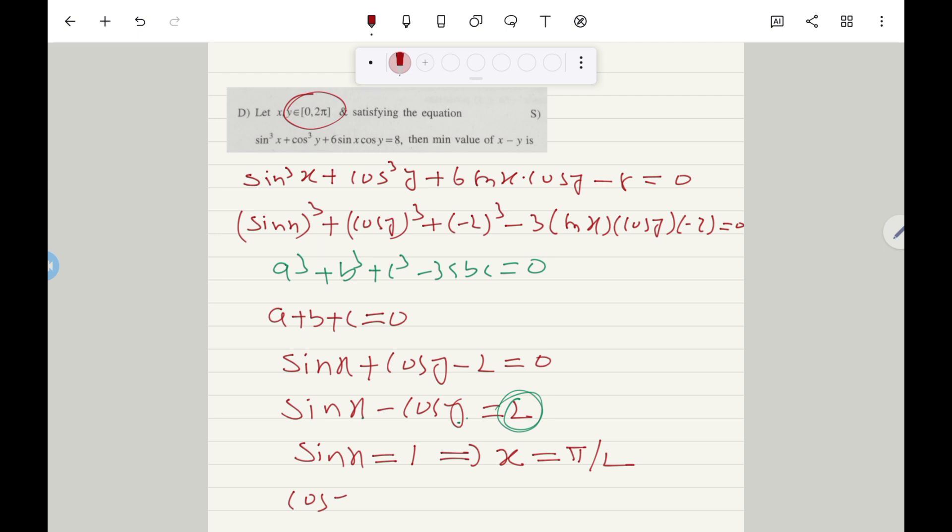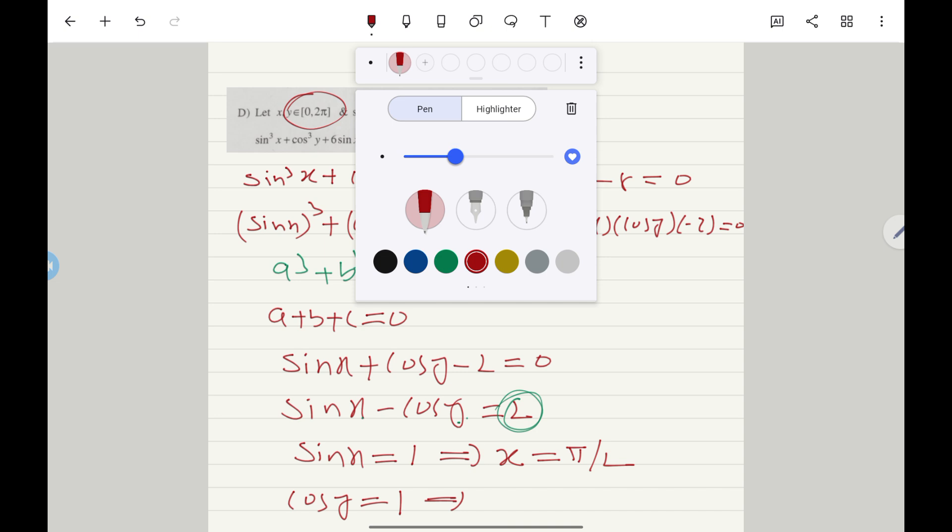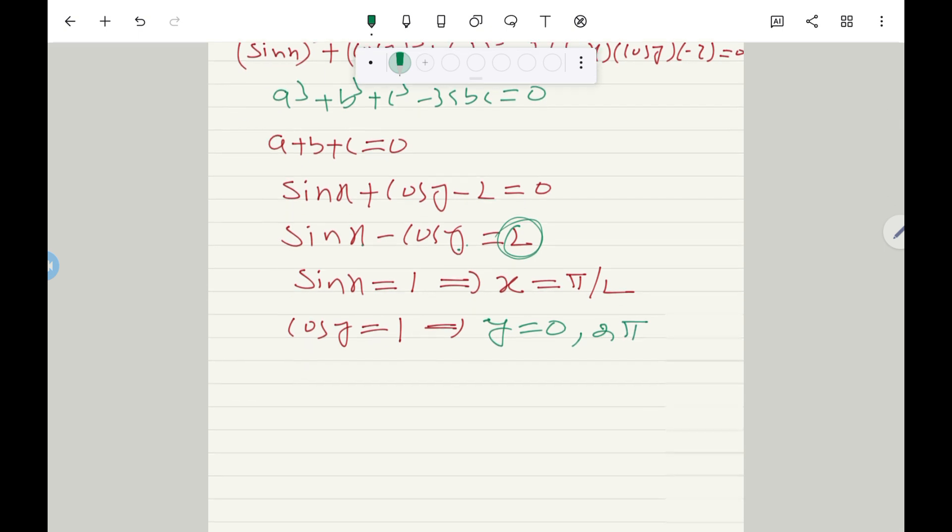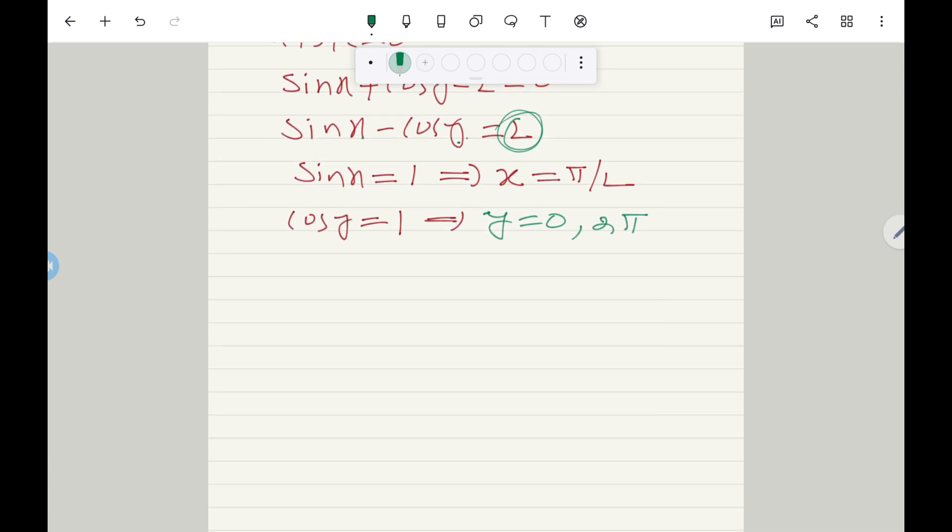Next cosy, cosy = 1. Here also we have infinitely many values for y, but I am going to find only the values which are in the interval 0 to 2π. So one of the y values is 0, because cos0 = 1. Another value of y is, that is 2π, so that also included because closed interval is given. So what I can say, the possible value of x is π/2 and possible y values are 0 and 2π.